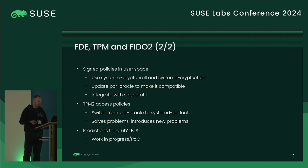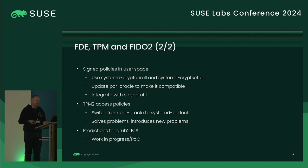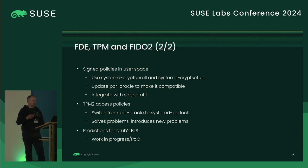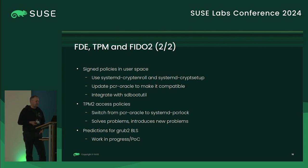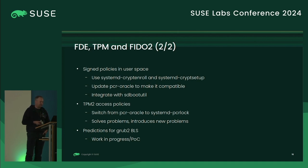There are several ways how these hashes are stored and signed. The first approach, also chosen by Olaf Kirch for PCR Oracle, is using signed policies in user space. With systemd-cryptenroll and systemd-cryptsetup together, we created a proof of concept and integrated it in sd-boot-util with systemd-boot. It's working, but we're not really happy. We looked at what upstream systemd is using — TPM access policies together with systemd-pcrlog — which solves some problems but introduces new ones, so we're still not fully happy.